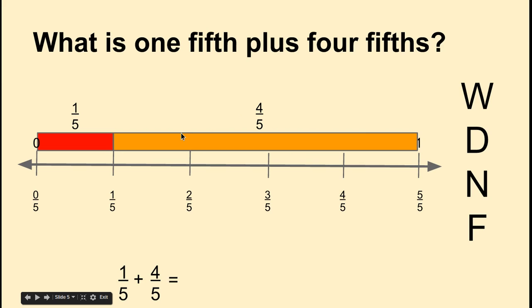Now this four-fifths bar starts at one-fifth on the number line, so it's going to go all the way up to five-fifths. That's how we know that one-fifth plus four-fifths equals five-fifths. That's our answer.